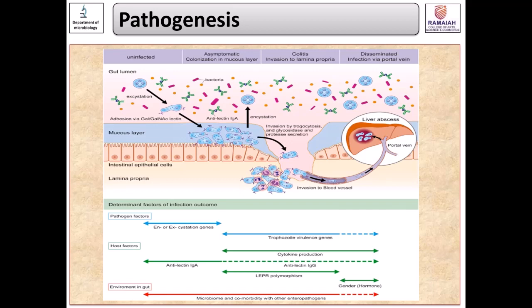After this, the trophozoites can further disseminate to the portal veins, and once there, they infect the liver and lead to liver abscess — a collection of pus and inflammation of the liver. In very severe cases, the infection outcome can be variable, and invasive disease can happen after more than one year of asymptomatic colonization. Pathogen factors, host factors, and the gut environment all influence infection outcome.